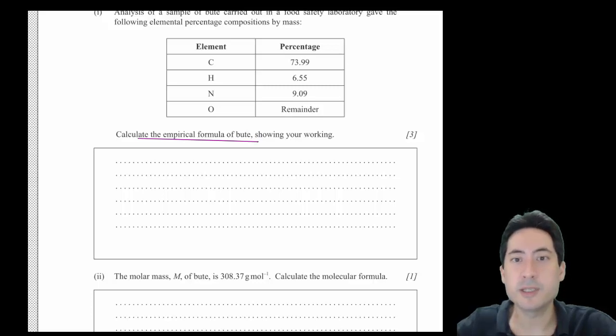Analysis of a sample of Butte carried out in a food safety laboratory gave the following elemental compositions by mass. When we're working out the empirical formula, we need to assume that we have 100 grams. So all of those things end up being 100, that becomes 73.99 grams, et cetera.